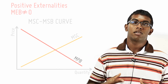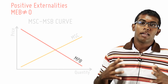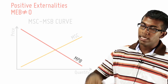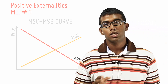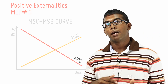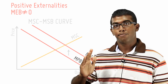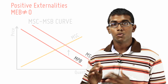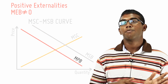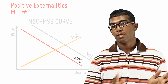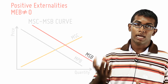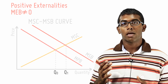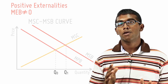Now, let's bring in the external benefit. From society's point of view, if we were to see the external benefit, that would actually shift the MSB — the social benefit — up. And because of that, we now see two different curves: the MPB, which is what I see as an individual, and the MSB, which is what society sees.